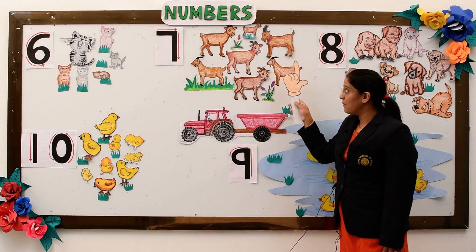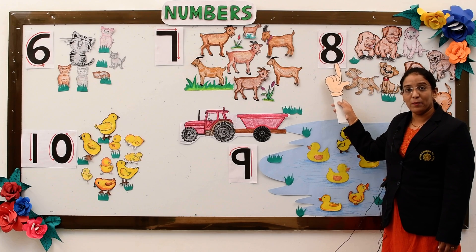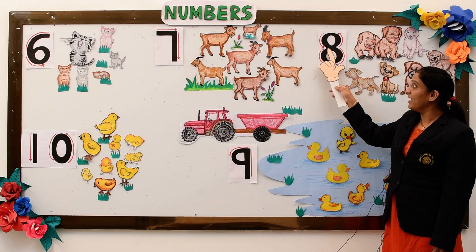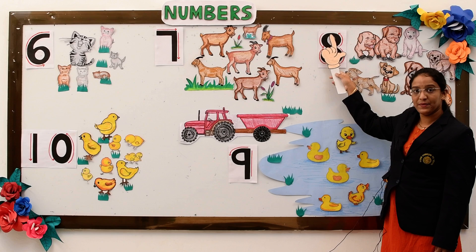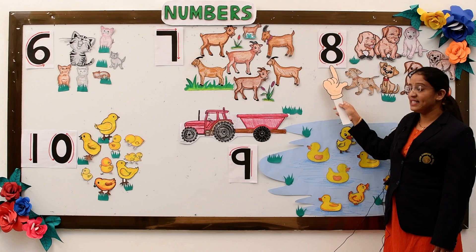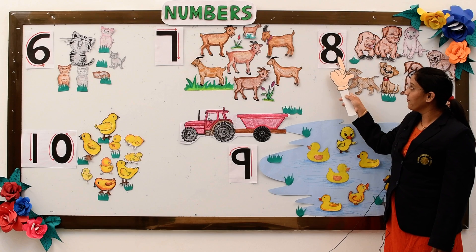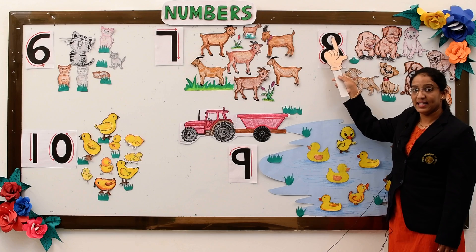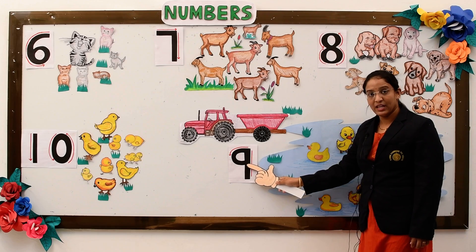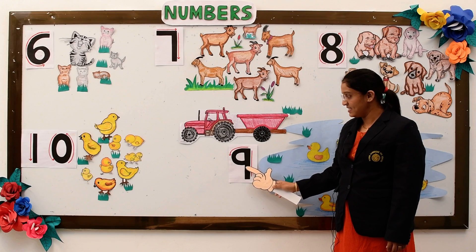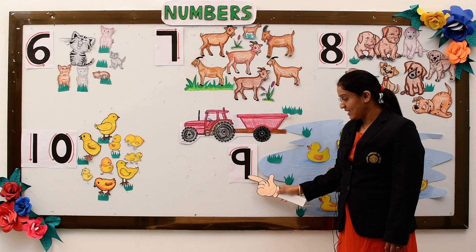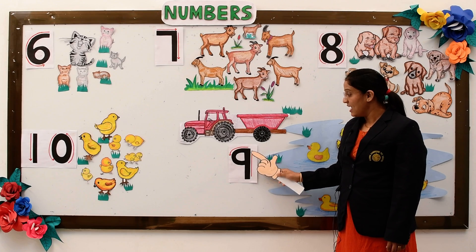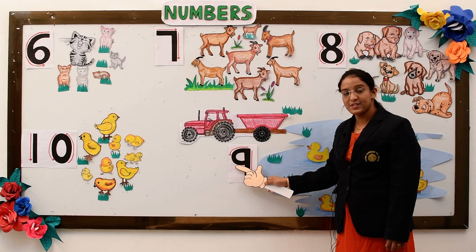The next number is number 8. The formation of number 8 is: make an S and then make a curve and take it up. The formation of number 9 is: a standing line and then a half circle.